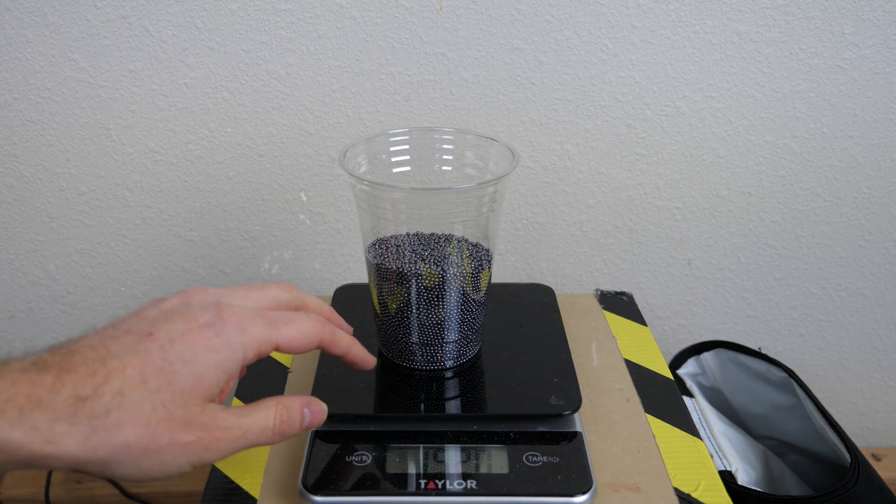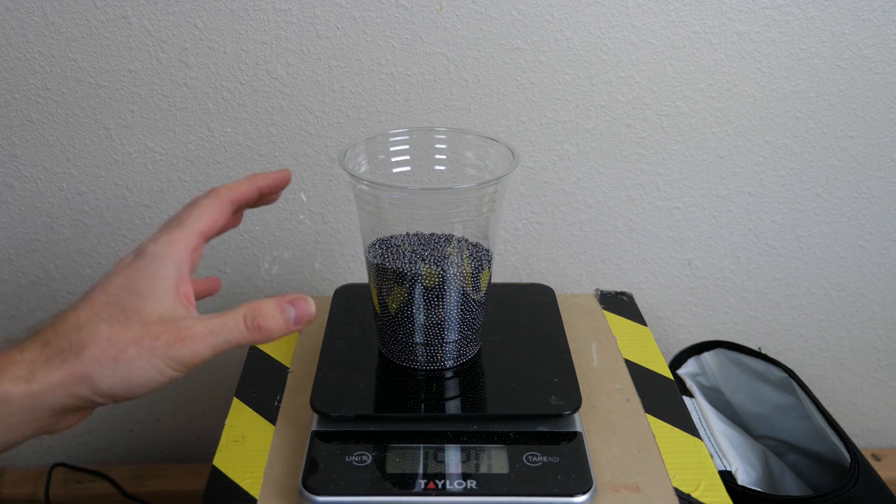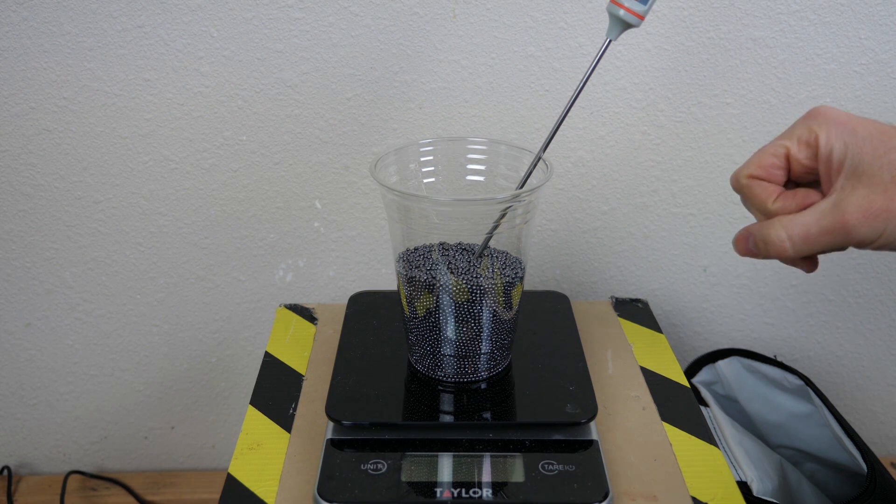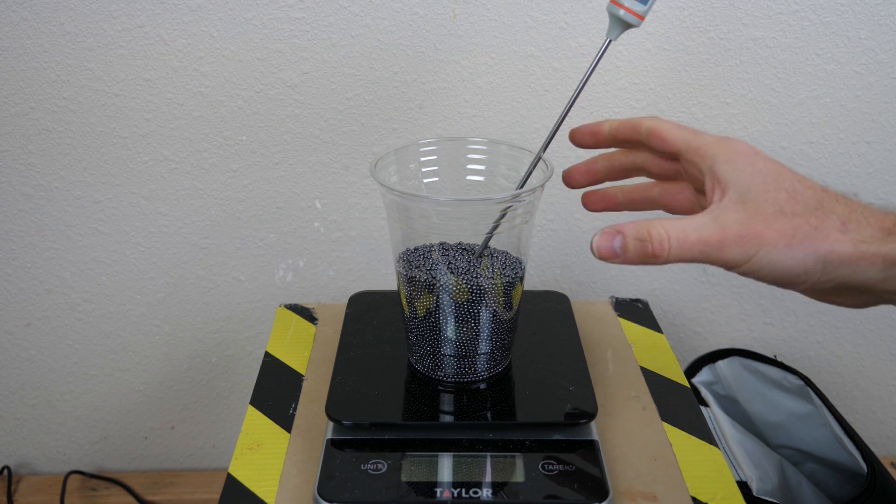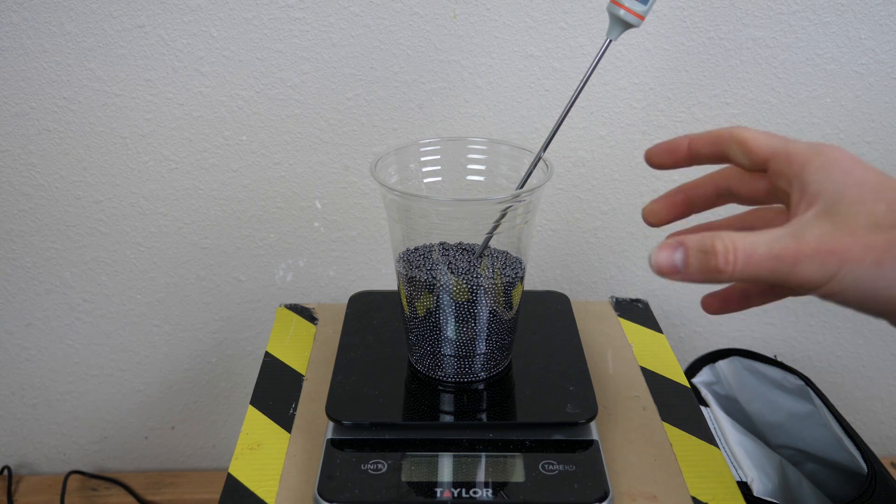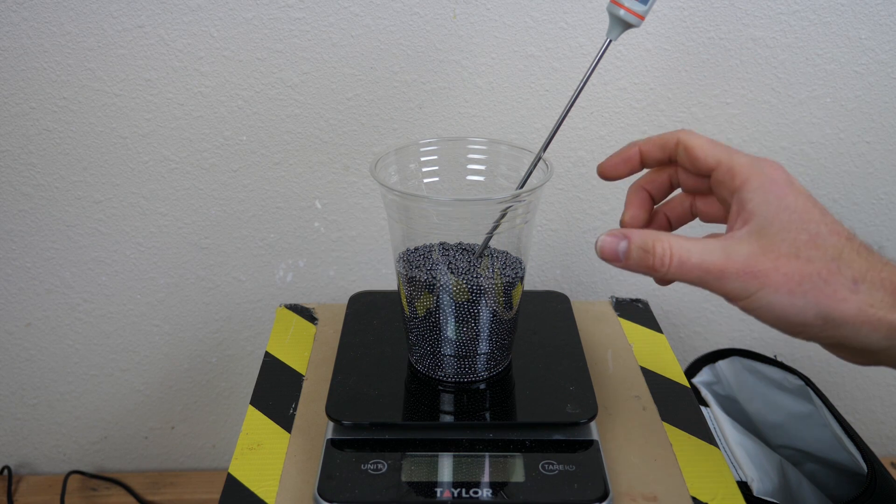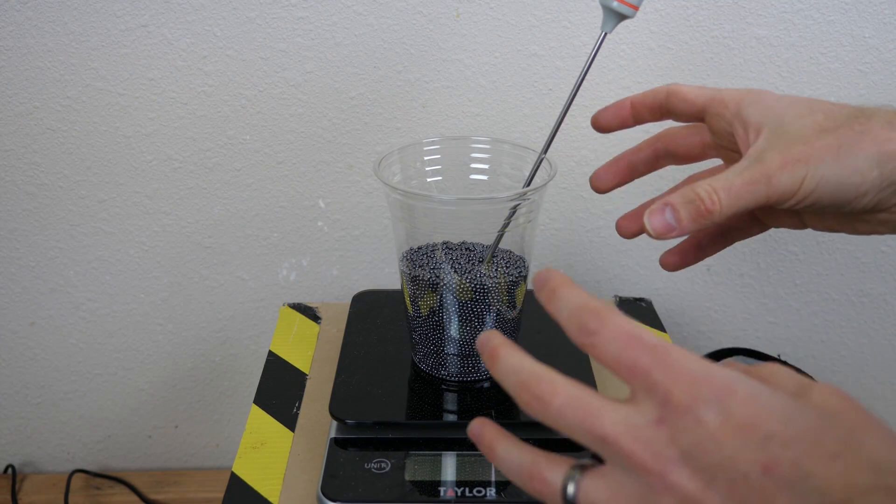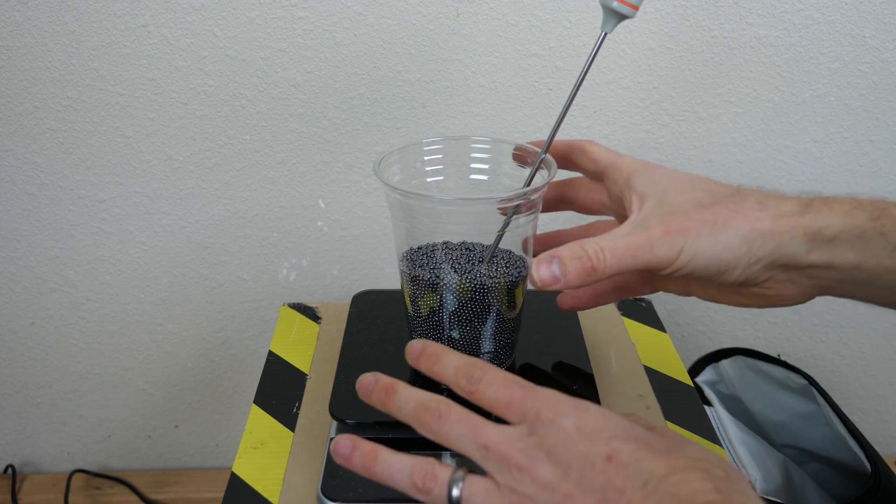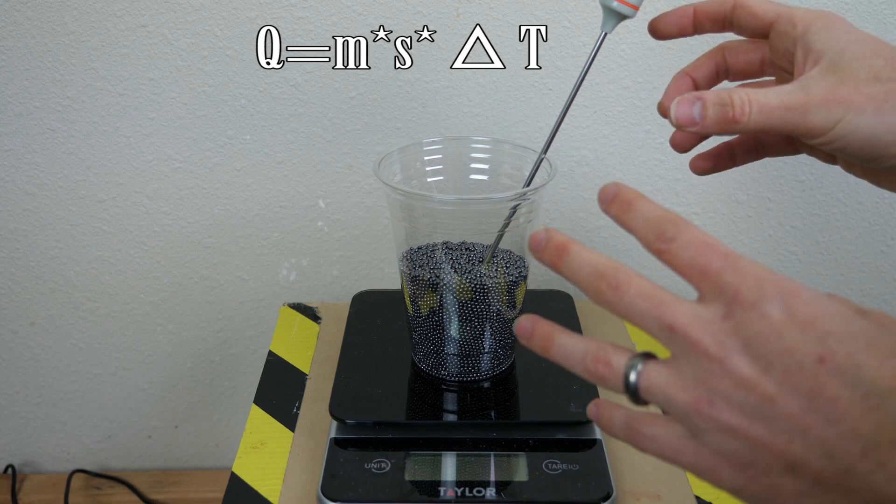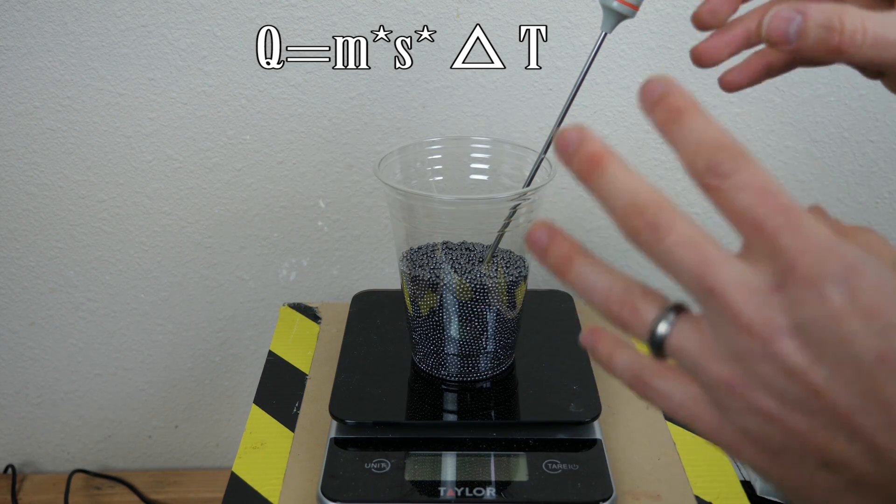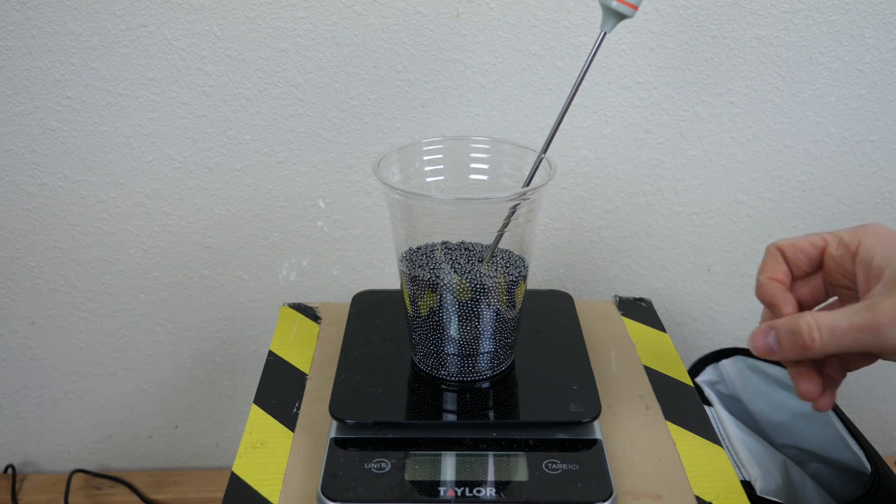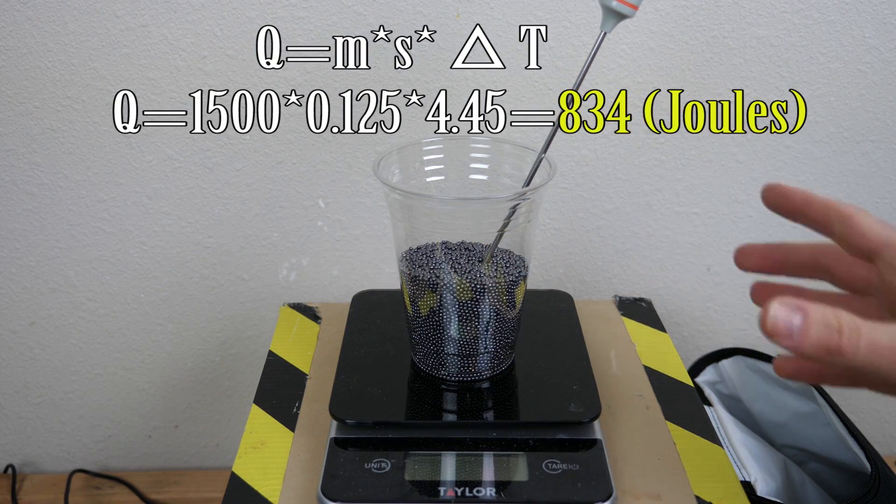We have 1520 grams. So 1.5 kilos. Now all we need to do to calculate how much heat we added to it is just to use the specific heat of lead. So the specific heat of lead is 0.125 joules per gram Celsius. All we have to do now is multiply the specific heat by the mass of our lead here and the change in temperature, which was about eight degrees Fahrenheit or about 4.45 degrees Celsius. So that gives me 834 joules of energy.